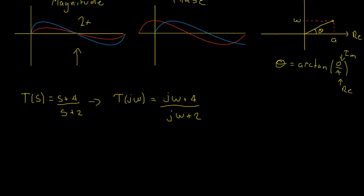Now, the magnitude of T of J omega is simply the magnitude of the top term divided by the magnitude of the bottom term. As we called the magnitude the hypotenuse of this right-angled triangle from the imaginary real component, we can think of it as the square root of the sum of squares.